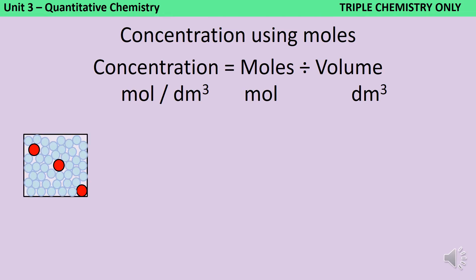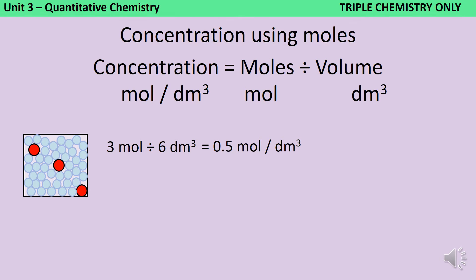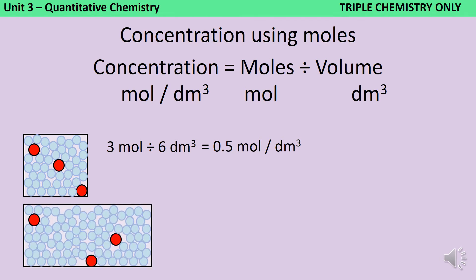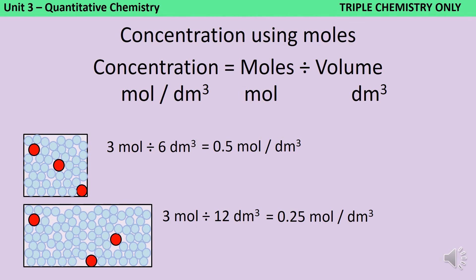If we assume that each one of these solute particles represents one mole of solute, then we have three moles of solute. If we assume the volume of this solution is six decimetres cubed, this gives a concentration of 0.5 moles per decimetre cubed. If we have the same amount of solute in double the amount of solvent, we would expect the concentration to halve — and that's exactly what we see: three divided by 12 gives us 0.25 moles per decimetre cubed.